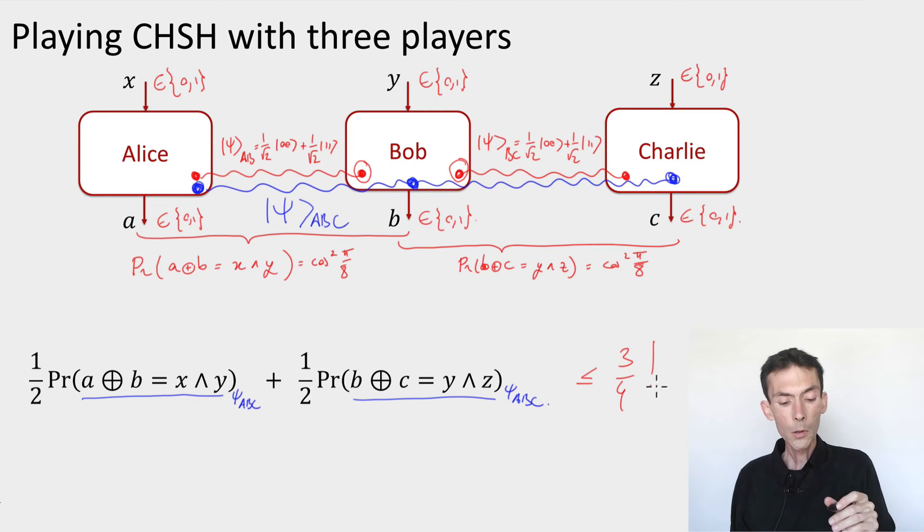Alice, Bob and Charlie all the time output zero. They don't need any entanglement if they always output zero and I choose the inputs x, y and z to be uniformly at random, then this expression will evaluate to three quarters.